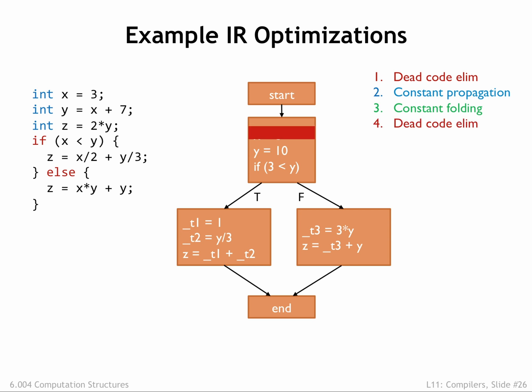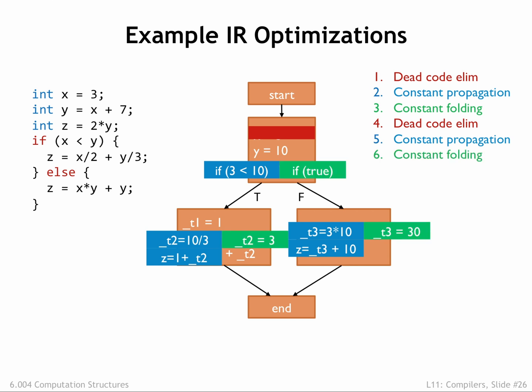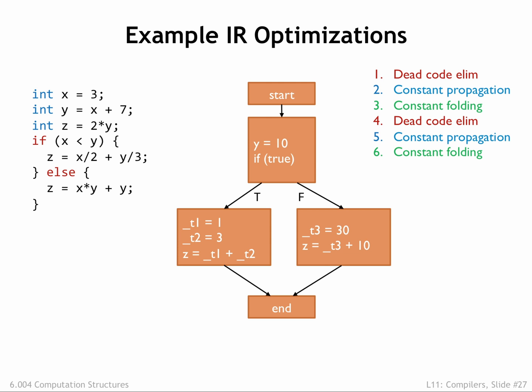First, dead code elimination, then constant propagation, and finally constant folding. So after 2 rounds of these simple operations we've thinned out a number of assignments. On to round 3.